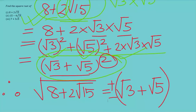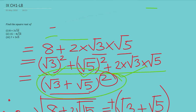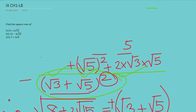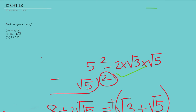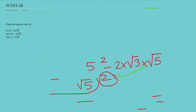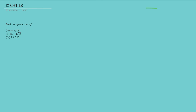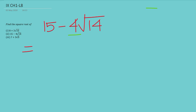In the same technique you can do the next problem. We have 15 − 4 root 14. Now be careful here — instead of 2 you have 4, but 4 is a multiple of 2, so we can break it down. We shall break 15 in the same line and we are not going to write 15 again separately.